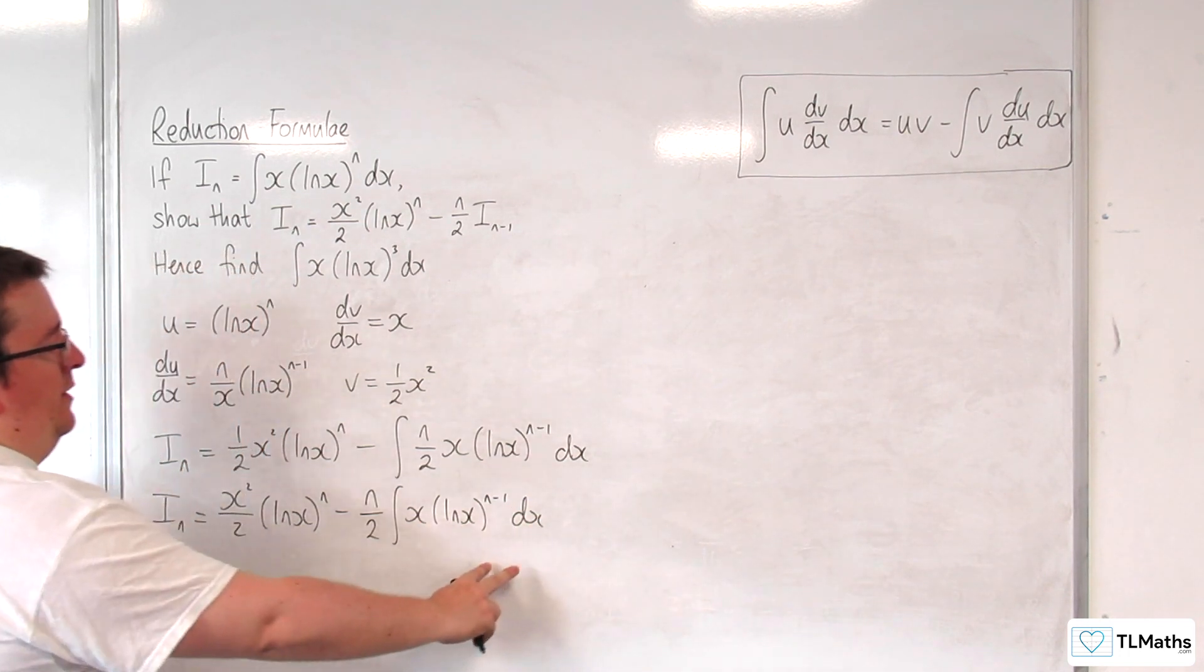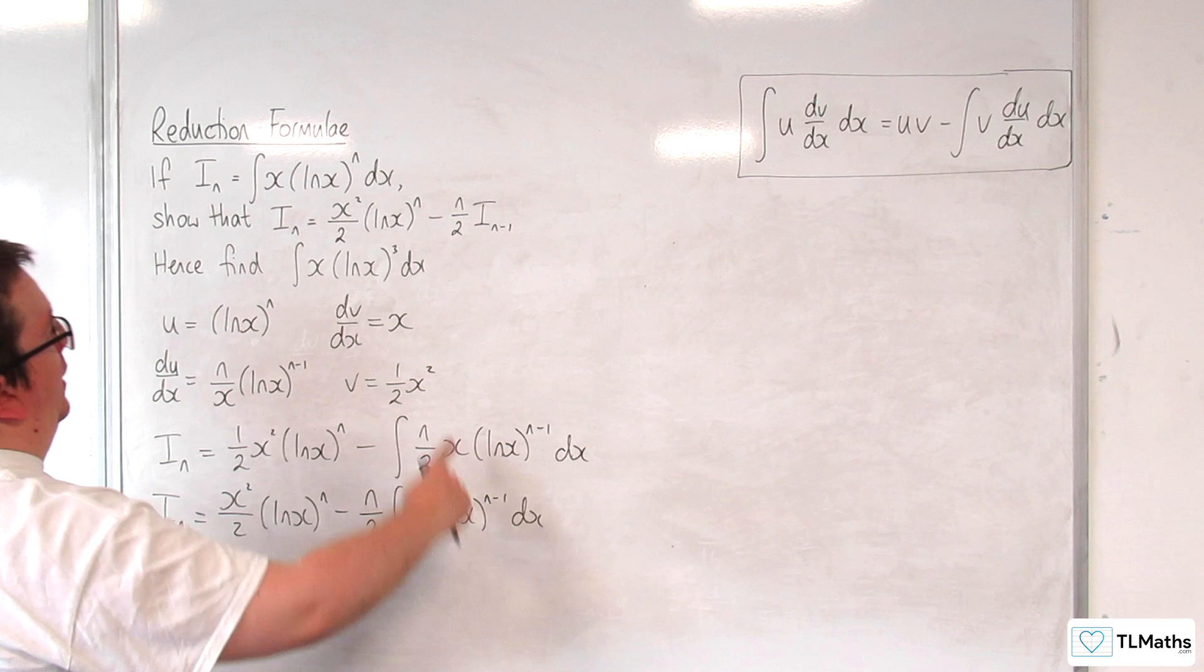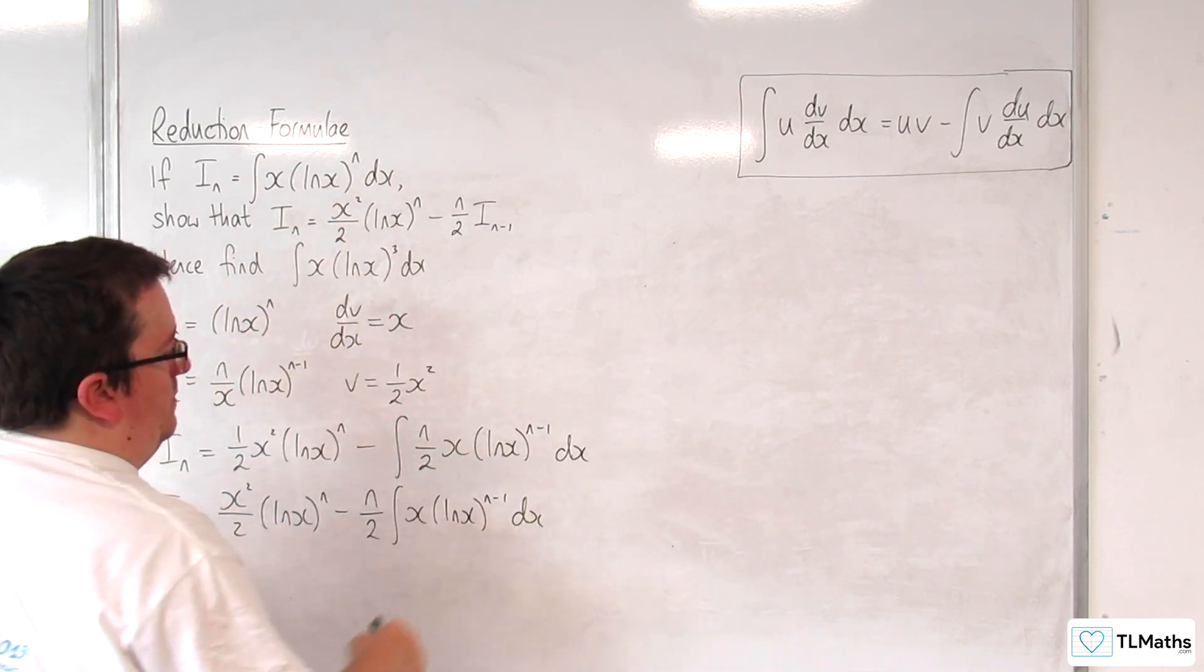And of course then recognizing that the integral I've got here is the same as i_n, but with the n replaced with n minus 1.